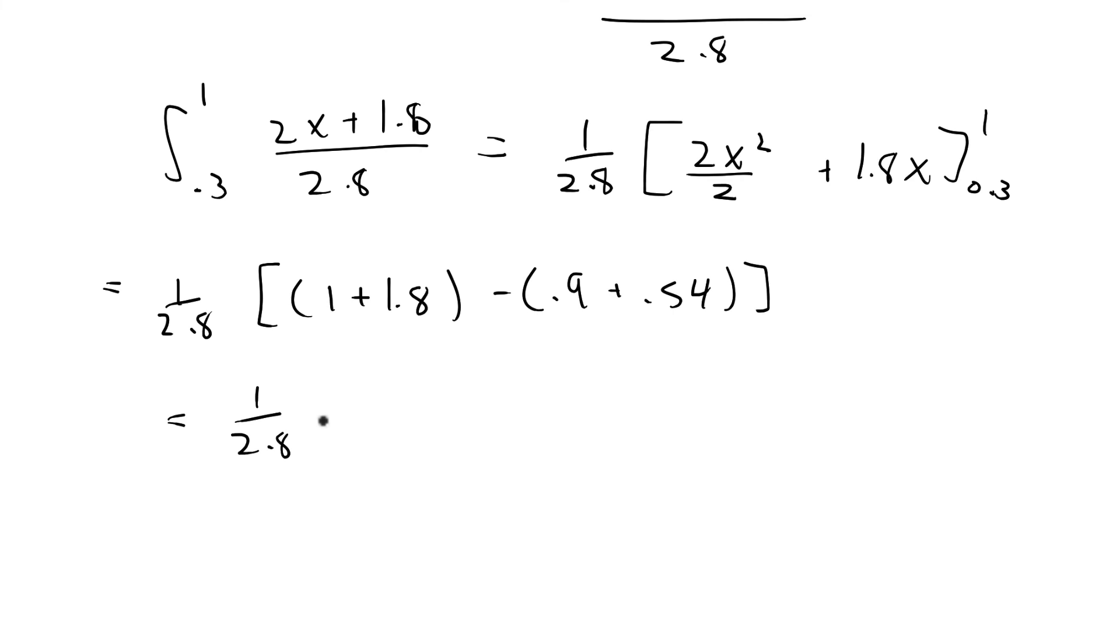which is equal to 1 over 2.8 of 2.8 minus 0.63 which is equal to 2.17 over 2.8 and then if we put that into a calculator, that gives me the final answer of 0.775.